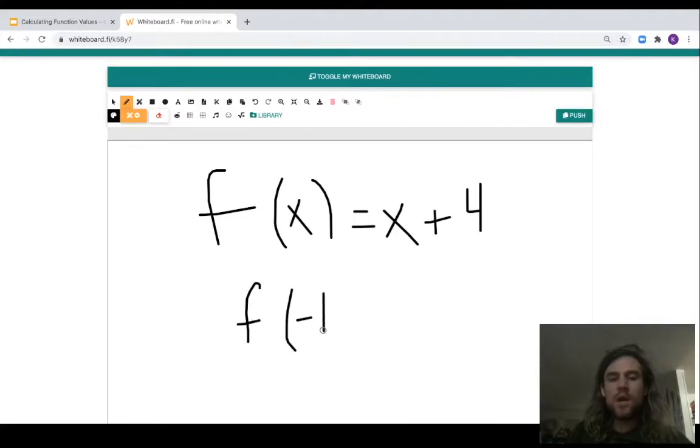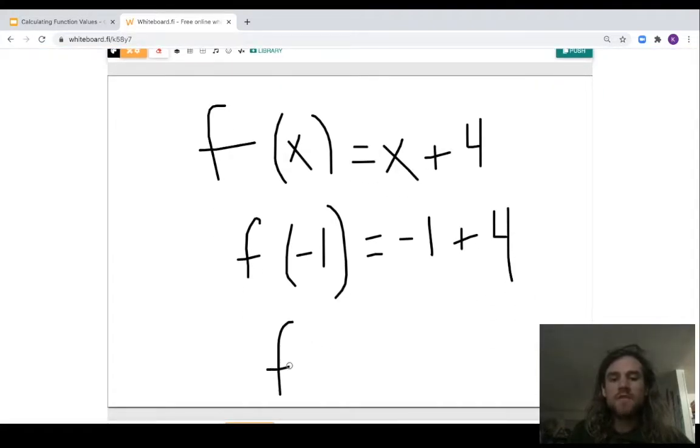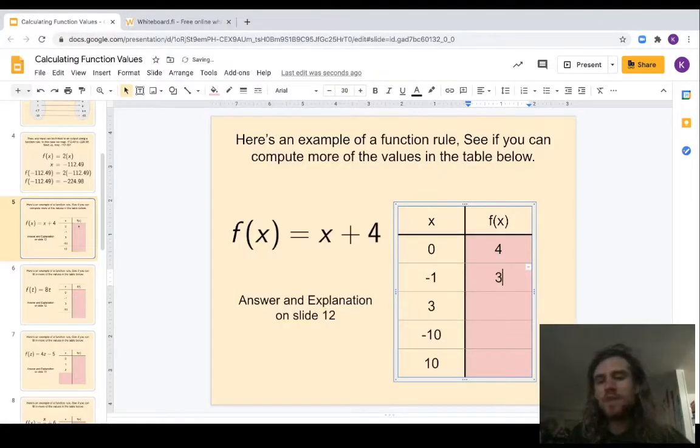Now we're doing f of negative one. Our x value is negative one, so that equals negative one plus four. Therefore f of negative one equals positive three. Let's fill that in right there.